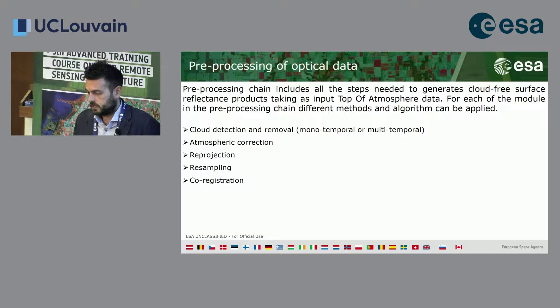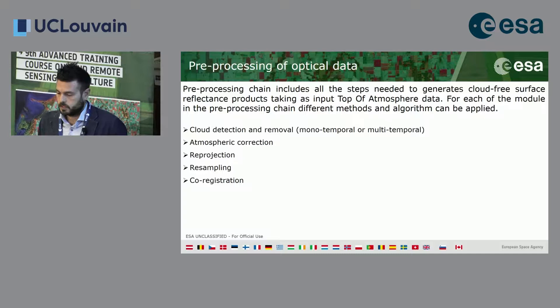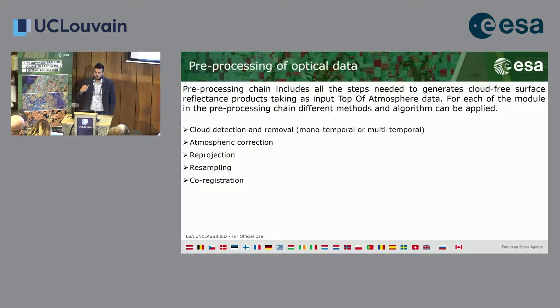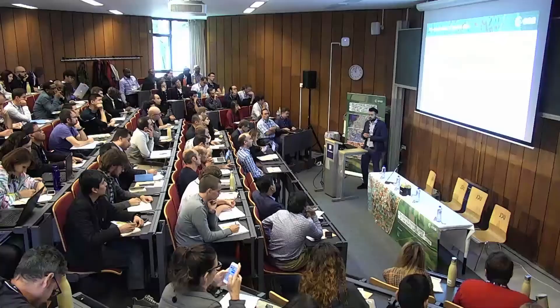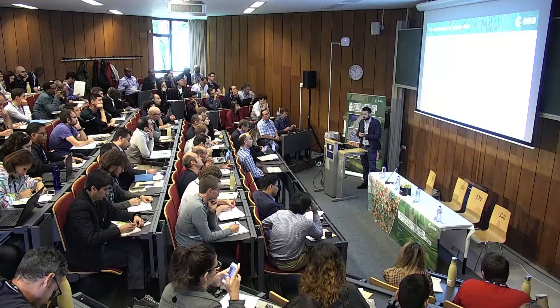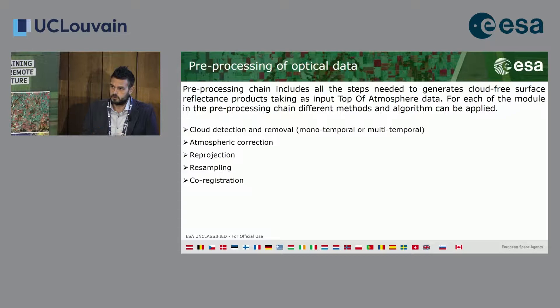There are several software processors that try to do cloud removal — monotemporal and multi-temporal. We also need to correct atmospheric effects, and don't forget to reproject if you have images coming from different sources or different satellites. Resample the product as well, because if you have different products with different spatial resolutions, you need the same spatial resolution for a consistent time series. After that, co-registration is needed because even a one-pixel shift will make your time series wrong.